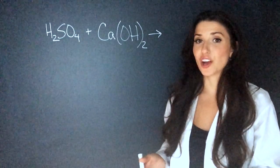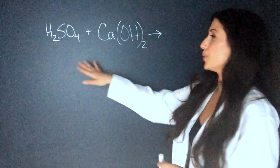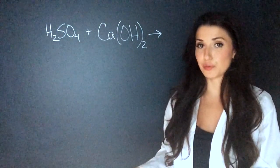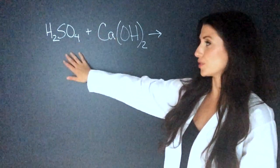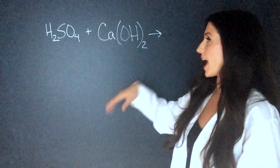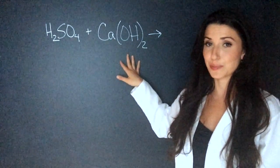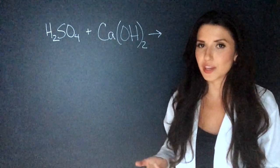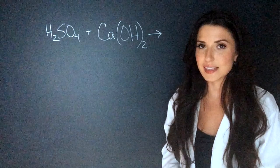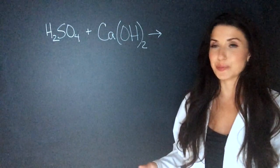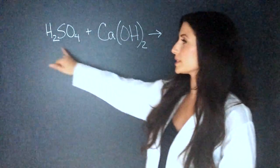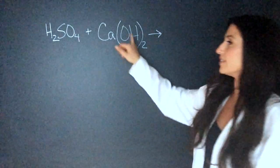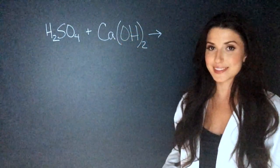So let's say on your exam you have this question and they ask you what salt will be formed. We have sulfuric acid and calcium hydroxide as our base. The first thing to do is figure out what your acid and base is. It's usually pretty easy to do because whatever substance has the hydrogen is usually the acid and the OH molecule is the base.